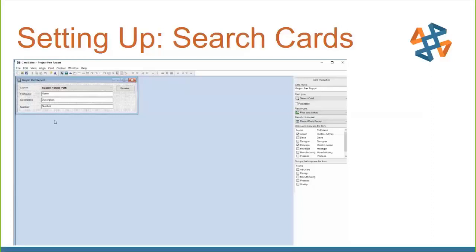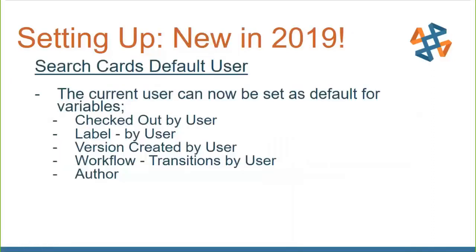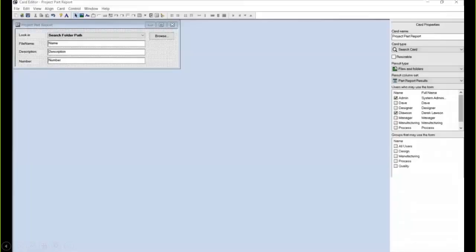We've set up some of our search cards, but there's actually a new feature inside of 2019 that allows us to pull whatever our current username is. So if I'm logged in as Derek Lawson it can put Derek Lawson into one of those search fields. If I'm logged in as John Doe it will put that username inside there. This can be set for things like the checked out by user, labels by user, versioning, workflow, and author as well.